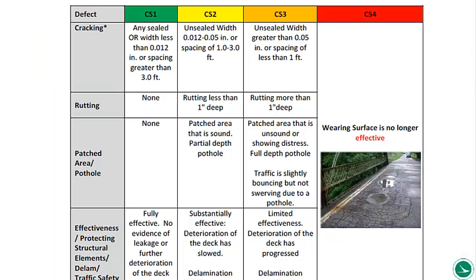This is Table 73 from the Manual Bridge Inspection, just to show you what we're going to discuss. This chart is available in Chapter 9 of the manual, under 'wearing surface' — the condition state definitions.